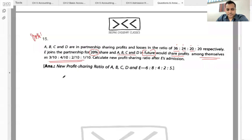Dhyan se dekhna - E joins for 20 percent share, which is equal to one-fifth, yes or no? Yes sir.